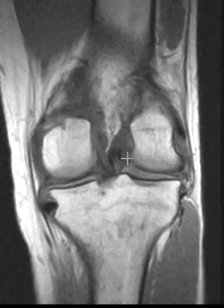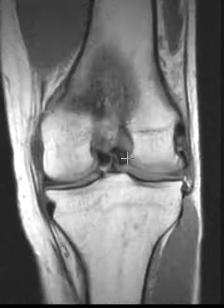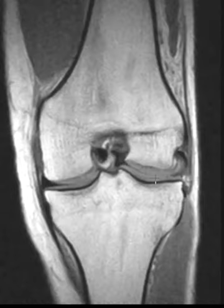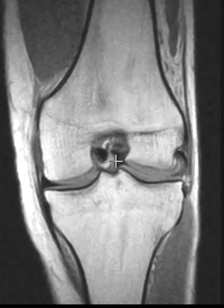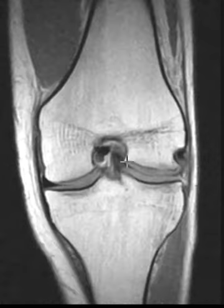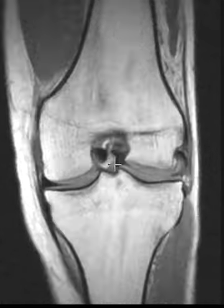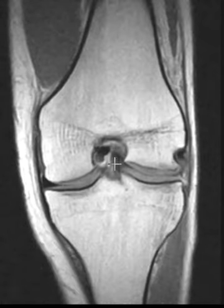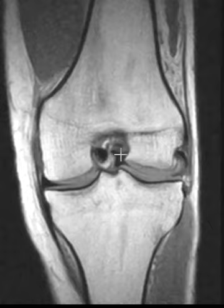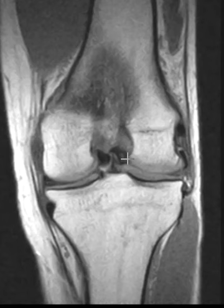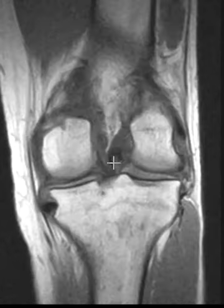When we see this, it often relates to what we call a bucket handle tear, where the meniscus is torn and just flips into the middle. This is called the bucket handle fragment, and it is right in the middle. The ACL — the anterior cruciate ligament — goes vertically right here, and this torn meniscus fragment right next to it is pushing on the ACL.